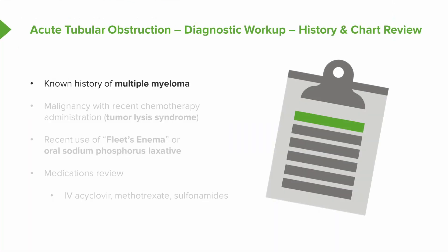How do we diagnose and work up our patients to clinch that diagnosis? We need to be good detectives, scour the chart, and take a thorough history. It's easier if we already know the patient has multiple myeloma and can think about precipitation of immunoglobulin light chains causing cast nephropathy. If a patient has a known malignancy and recently received chemotherapy, we think about tumor lysis syndrome. We also need to ask: have our patients recently used a fleet enema or oral sodium phosphorus laxative?